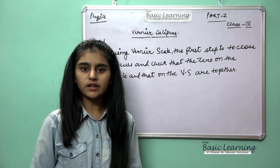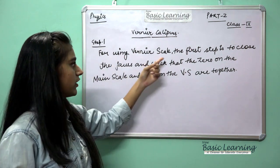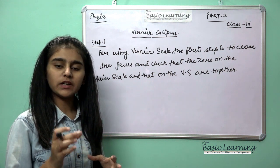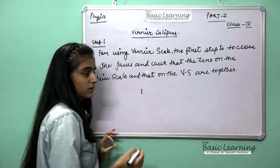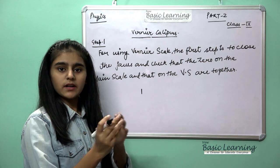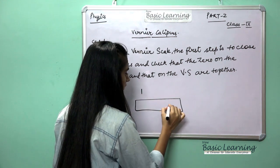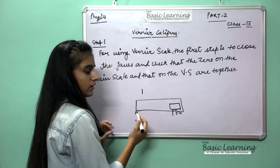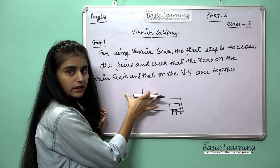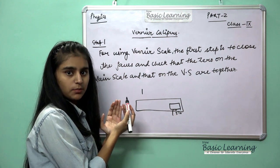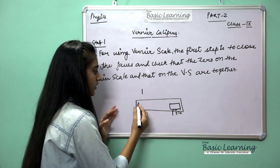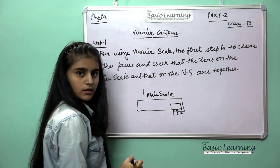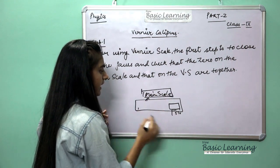Now, for using the Vernier caliper properly, the first step is to close the jaws. When we close the jaws, we have to check that the zero on the main scale and the zero on the Vernier scale are aligned. This is the main scale and this is the Vernier scale. We check whether both zeros match.